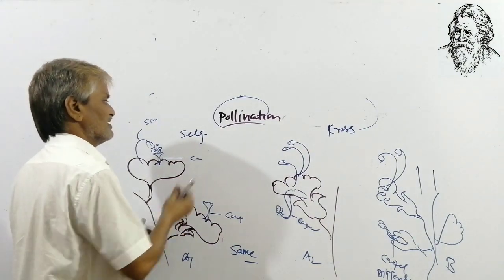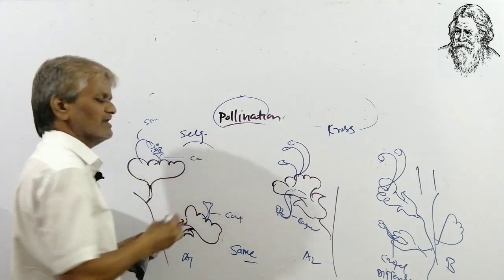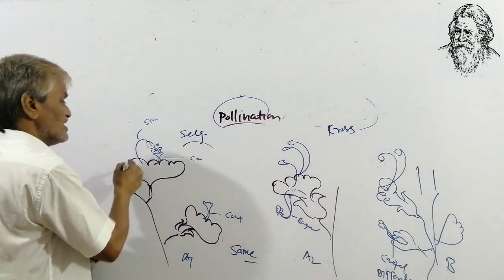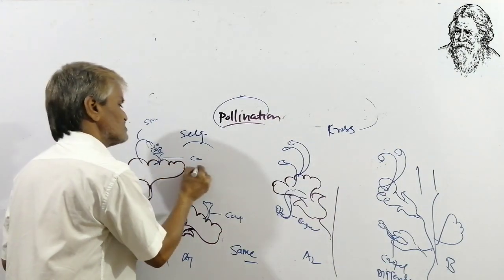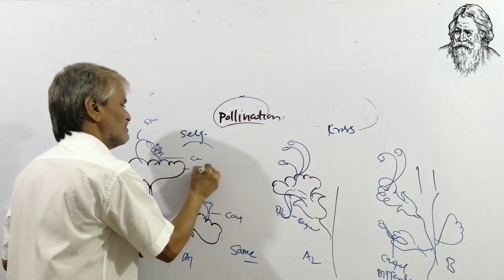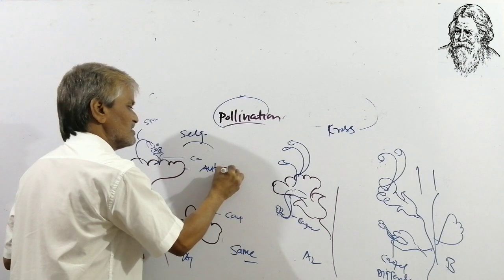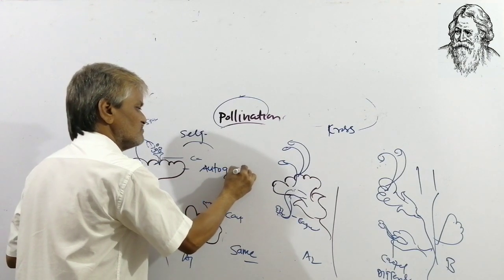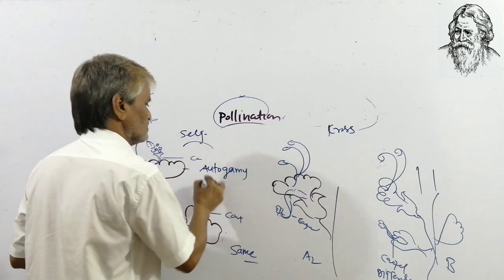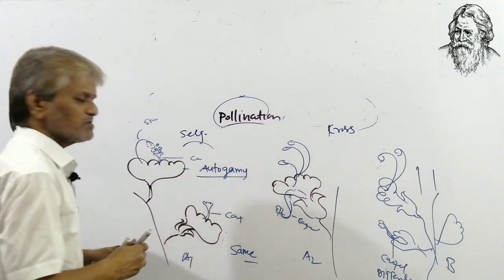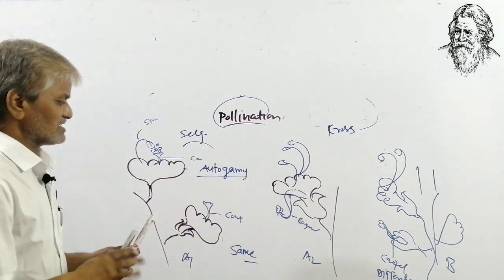Self-pollination again has two kinds: one is called autogamy, and the other process is called geitonogamy. Cross-pollination also has two kinds.